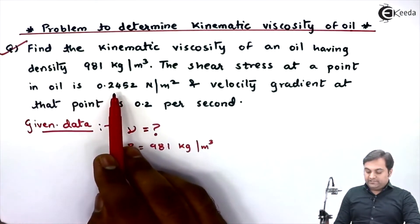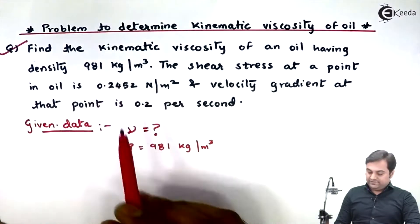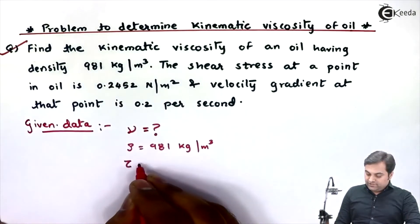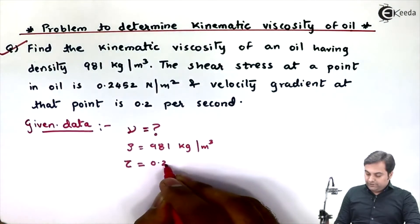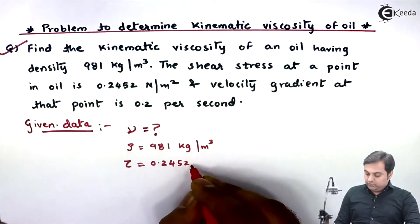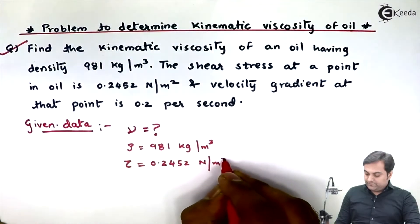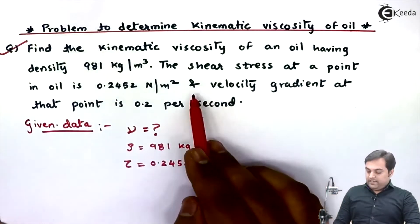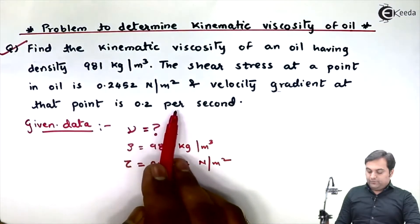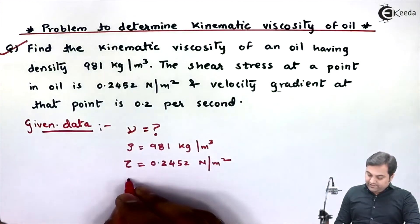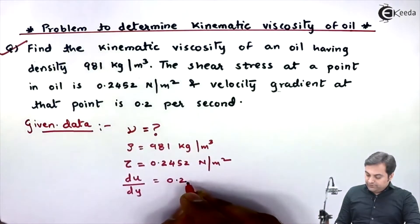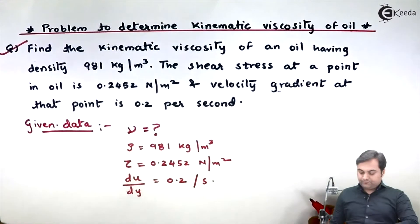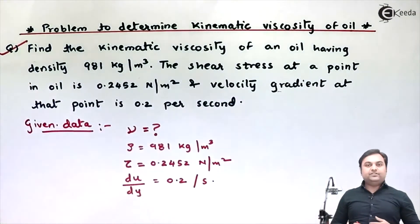The shear stress at any point in oil, denoted by tau, equals 0.2452 Newton per meter square. And velocity gradient at that point is 0.2 per second. Velocity gradient is du by dy and it is 0.2 per second. So this is the question we have in front of us.